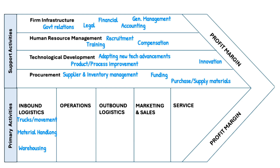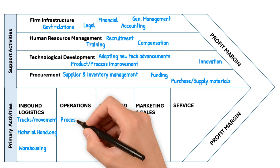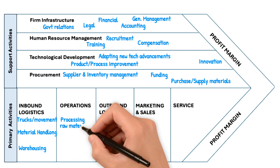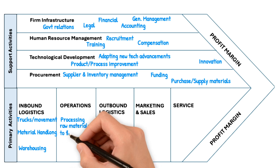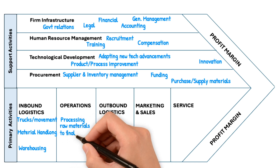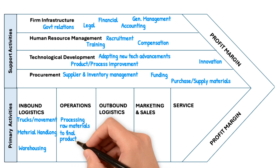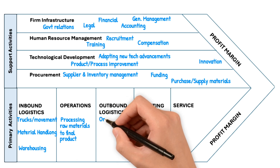Now since we have got the supplies and the material with us, we do the operations. This means we are manufacturing something — processing raw materials into finished goods, converting them into consumable goods. The whole process in between is what we call operations, and this is the second point of the primary activities.